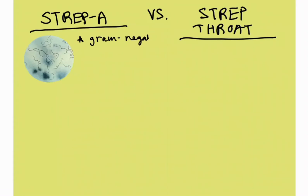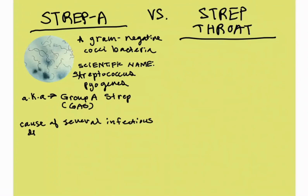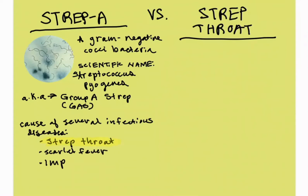Strep A is a gram-negative cocci bacteria. Its scientific name is Streptococcus pyogenes, and it is also called Group A Strep or GAS. Strep A can be the cause of various infections in various parts of the body, including scarlet fever, impetigo, and cellulitis, but we are mainly going to focus on strep throat for this video.